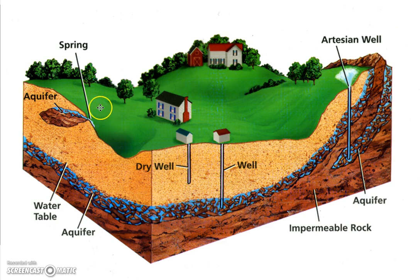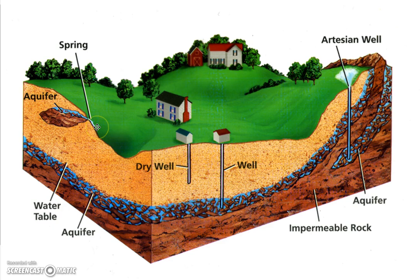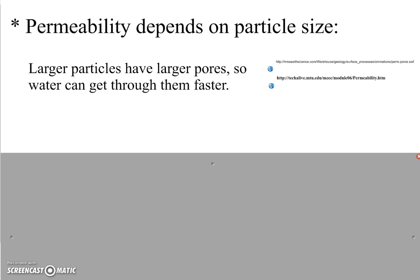A spring is a very similar thing. The water will go through the soil until it reaches an impermeable rock. With a spring, the water comes out on its own because of gravity pulling it down. An aquifer is just a place where water gets trapped underground in large quantities. Now, permeability, unlike porosity, does depend on particle size.